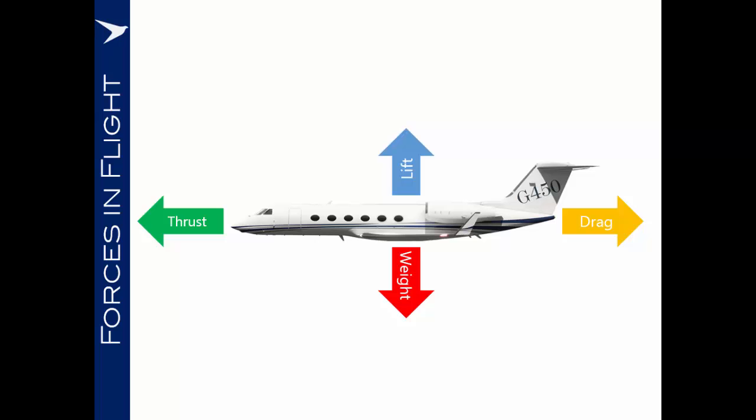If, however, we were to increase the magnitude of one of these forces — for instance, to advance the throttles and increase the thrust being generated by the engines — the thrust vector would be larger than the drag vector and we'd feel an acceleration of the aeroplane, which is manifested by the aircraft speeding up.